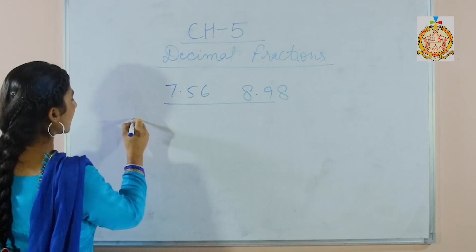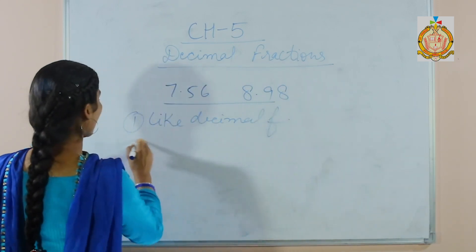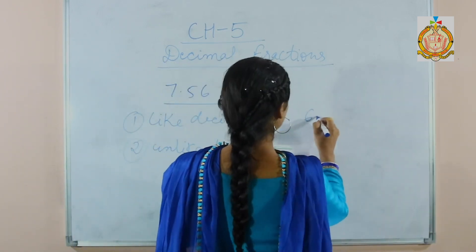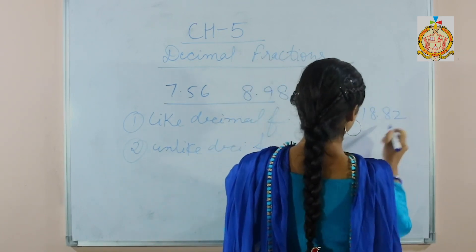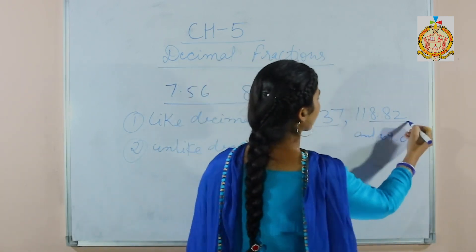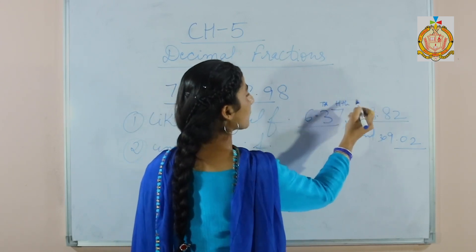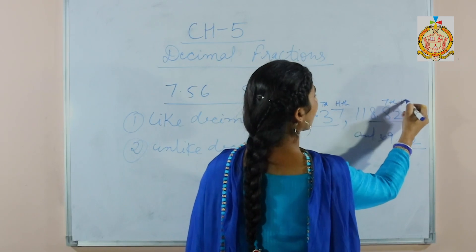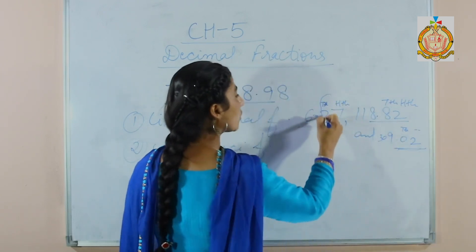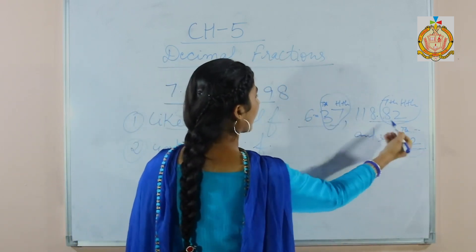There are two types of decimals. The first one are like decimal fractions and the second are unlike decimal fractions. For example, 6.37, 118.82, and 309.09. In these three figures, see there are two decimal places after the decimal — the 10th place and the 100th place. So in these three figures there are two decimal places after the decimal, so these are like decimal fractions.